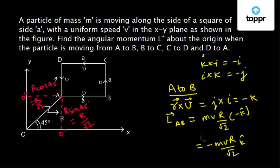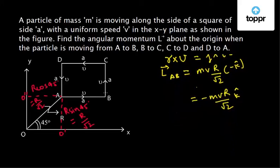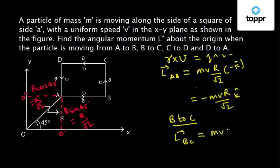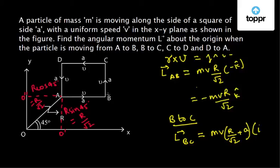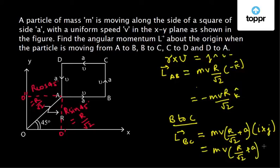For path B to C, the angular momentum vector L(B→C) = mv·(r/√2 + a) with direction determined by r × v. Here r is in the positive x direction (i) and velocity is in the positive y direction (j). Since i×j = k, the angular momentum vector L(B→C) = mv·(r/√2 + a)·k̂.